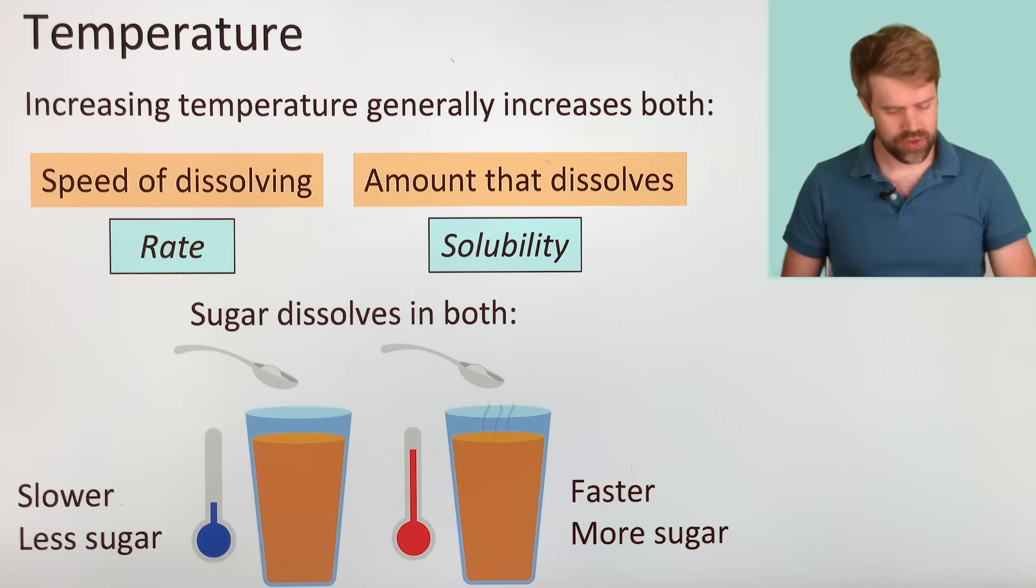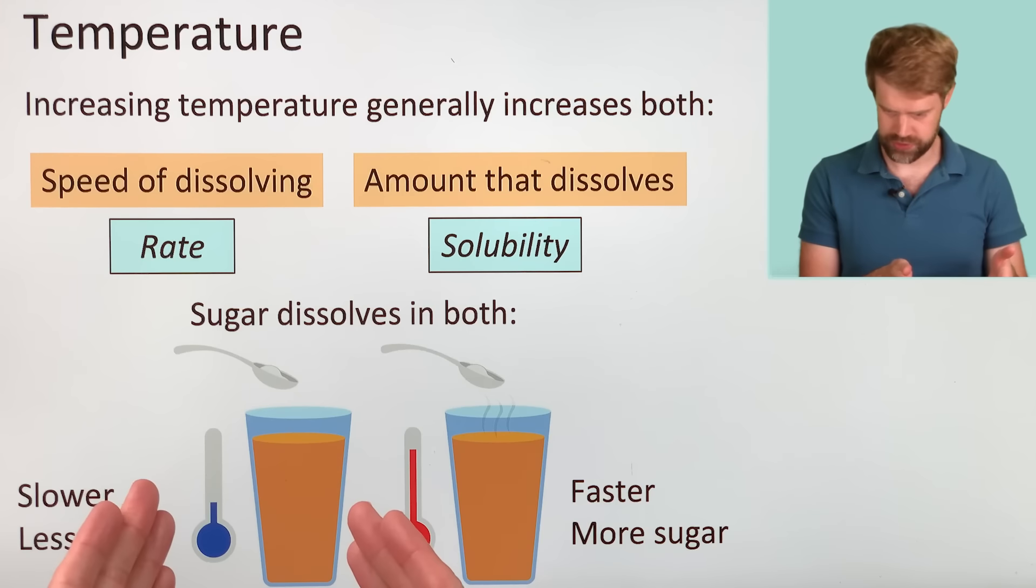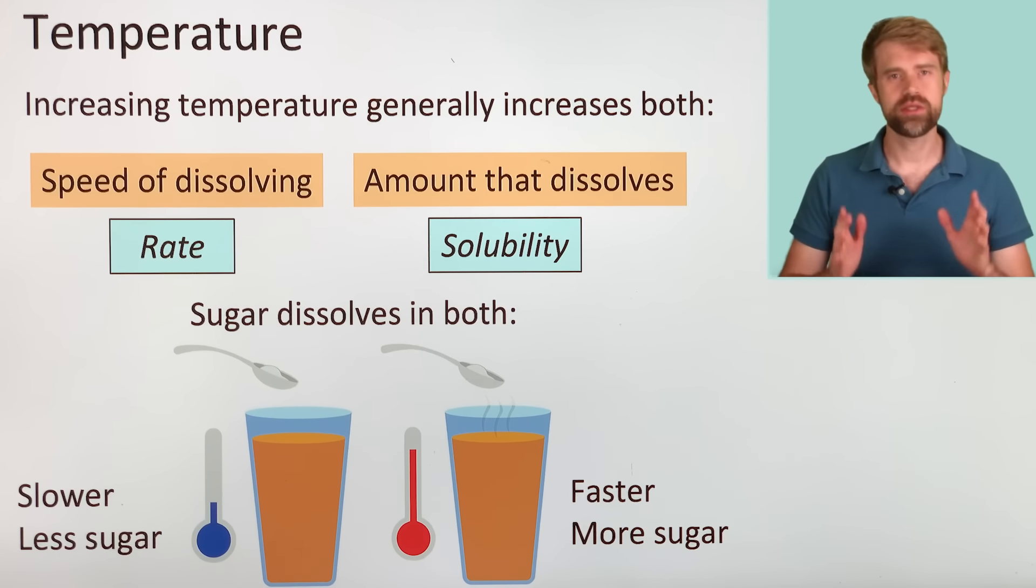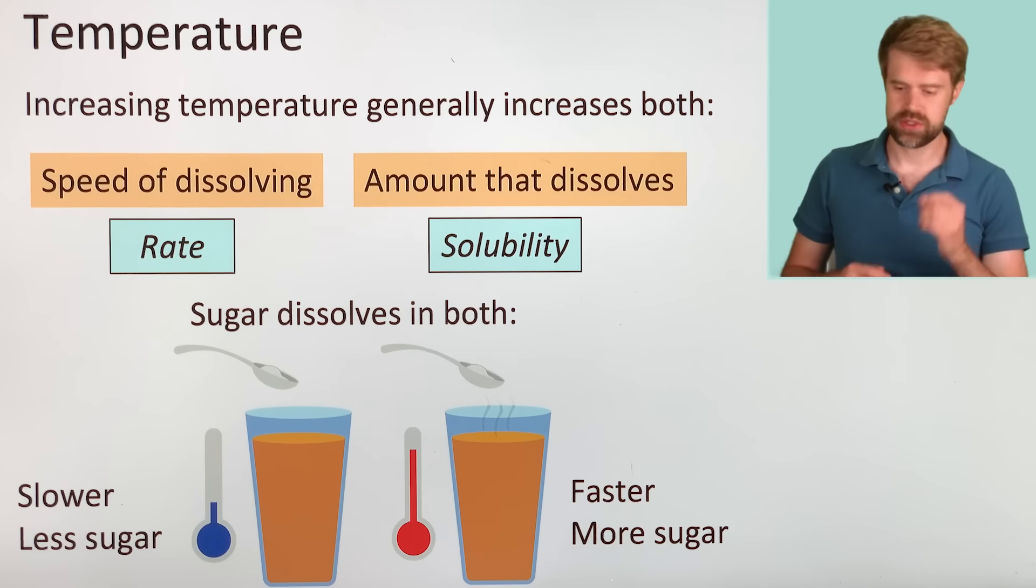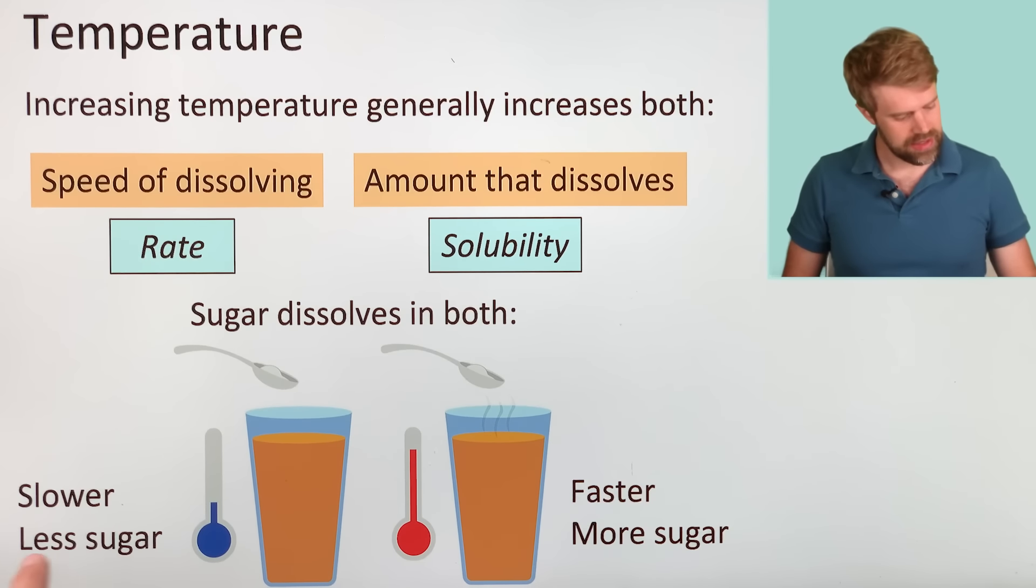For example, imagine that you have one teaspoon of sugar in hot tea and cold tea. The sugar dissolves faster in the hot tea. But because temperature also affects solubility, we'd be able to dissolve even more sugar in the hot tea than in the cold tea.